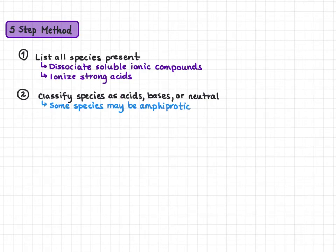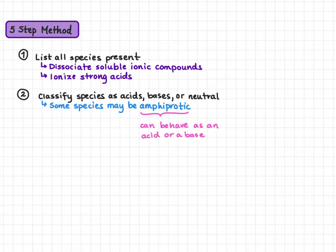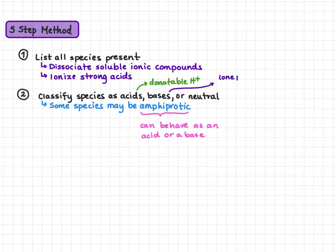Our next step is to classify these species as acids, bases, or neutral. It's important to remember that some species may be amphiprotic — amphiprotic means that the species can behave as an acid or a base. You'll find amphiprotic species in both the acid and the base column of your acid-base table on pages eight and nine. When classifying an acid, you're looking for a donatable proton. When classifying a base, you're looking for either a lone pair of electrons to bond with the acid or a negative charge.